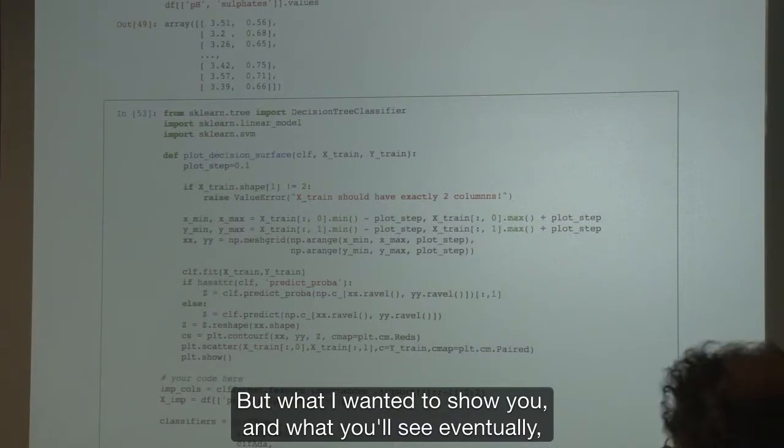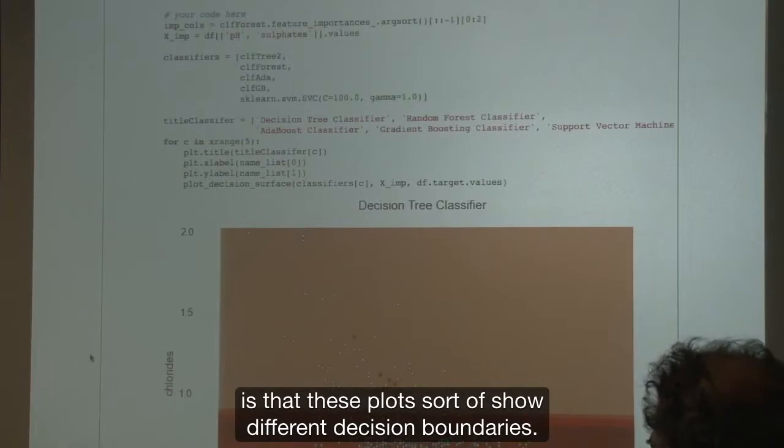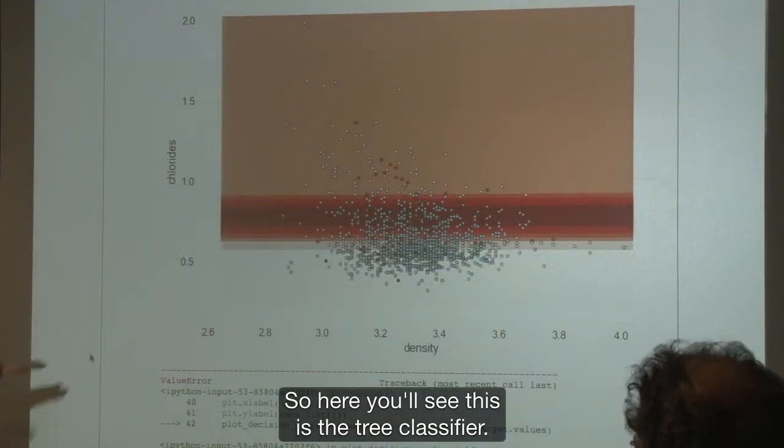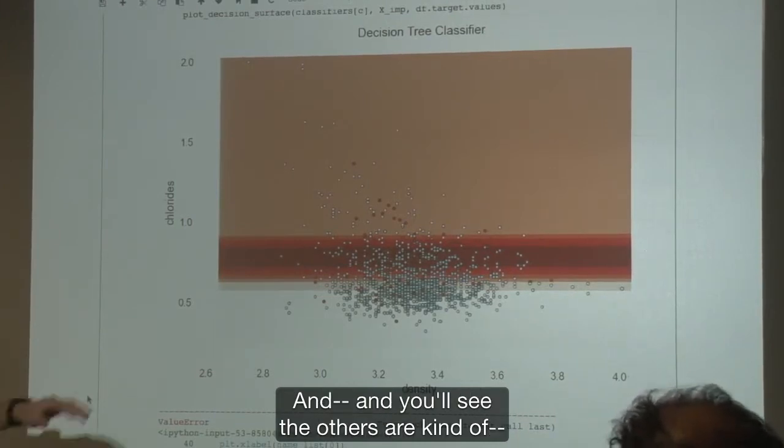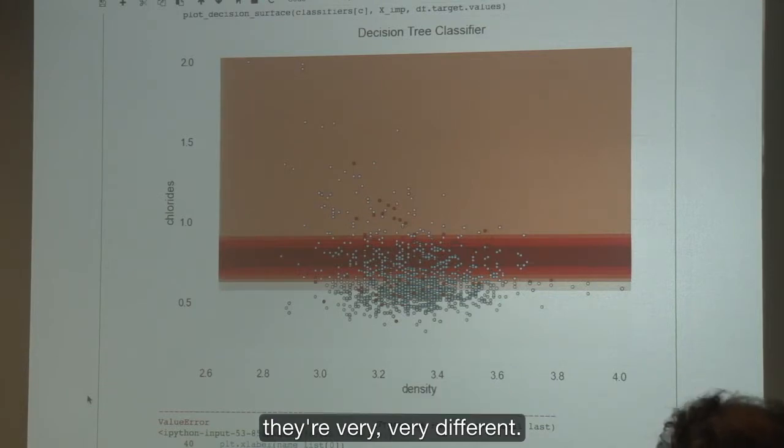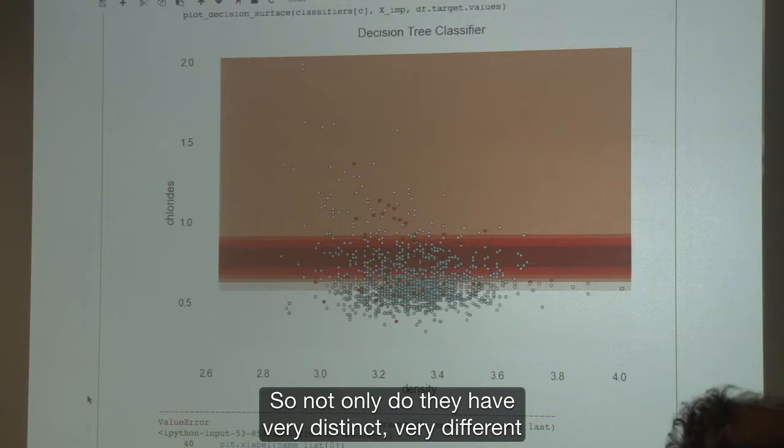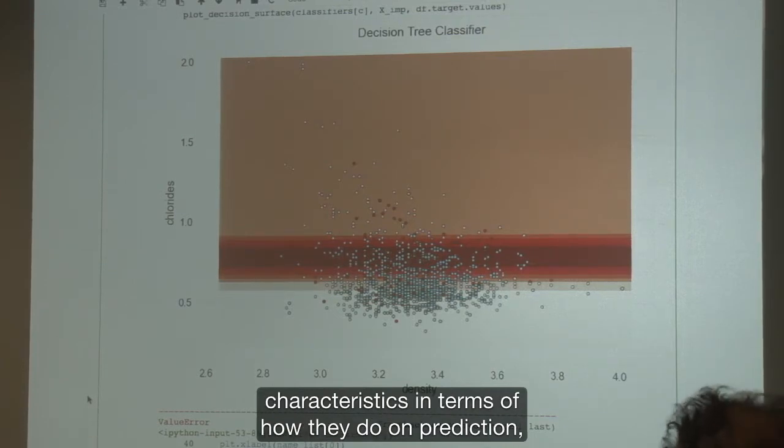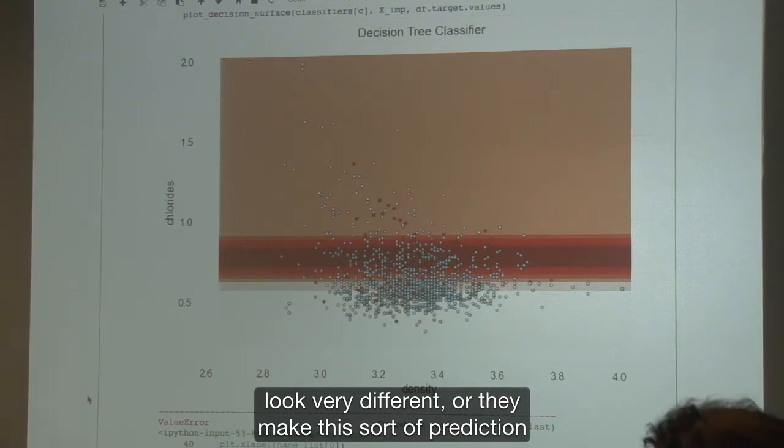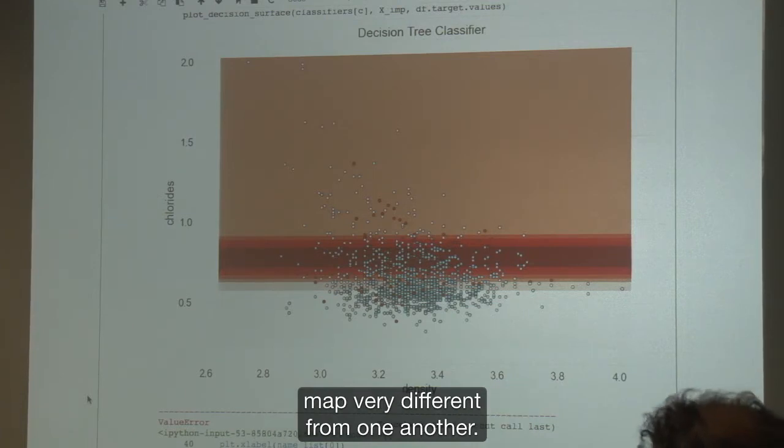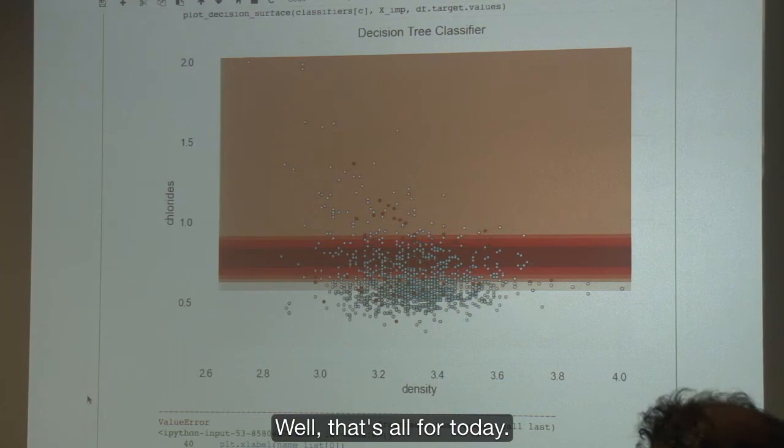So I'll debug this and put up a fresh copy on GitHub soon. But what I wanted to show you and what you'll see eventually is that these plots show different decision boundaries. So here you'll see this is the tree classifier. And you'll see the others are very different. They're very distinct from one another. So not only do they have very distinct characteristics in terms of how they do on prediction, but they also look very different. They make this prediction map very different from one another. Well, that's all for today. We'll see you next week.